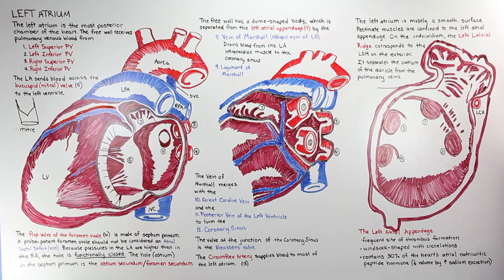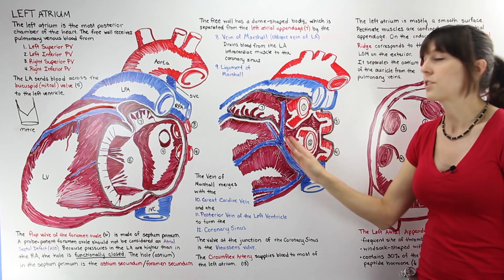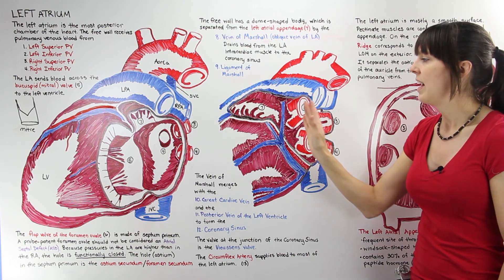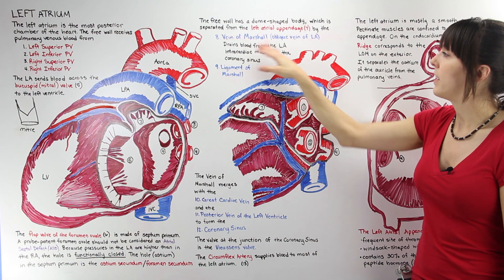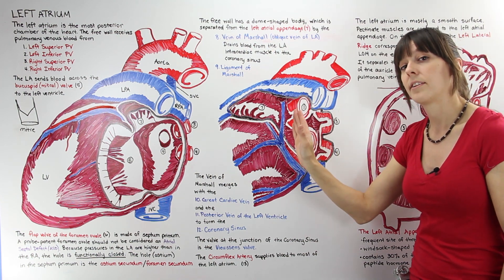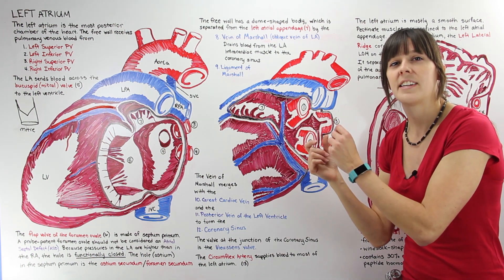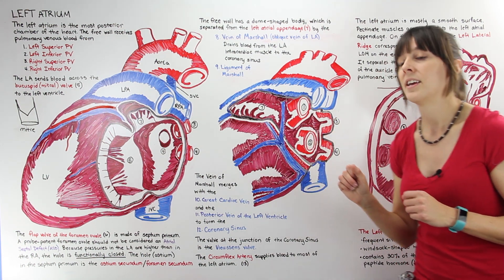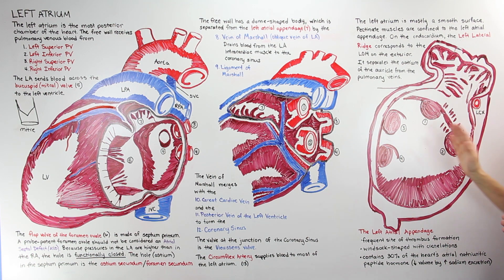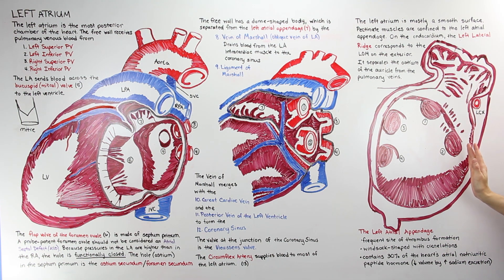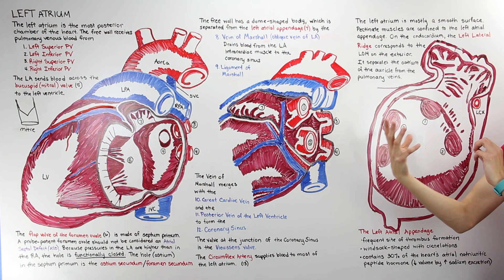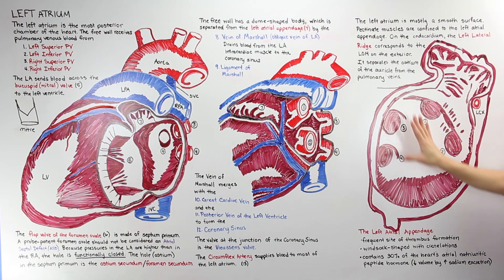On the endocardium, we have a left lateral ridge, which corresponds to the ligament of Marshall on the exterior. The ligament of Marshall runs right next to the vein of Marshall — the oblique vein of the left atrium — and is a little fold of tissue that persists as a remnant of an embryological structure. On the inner aspect of the heart, the left lateral ridge is parallel to the exterior ligament of Marshall, and it separates the ostium of the auricle from the pulmonary veins.